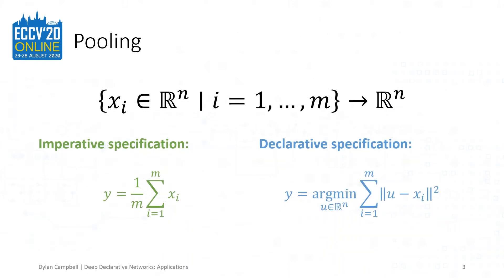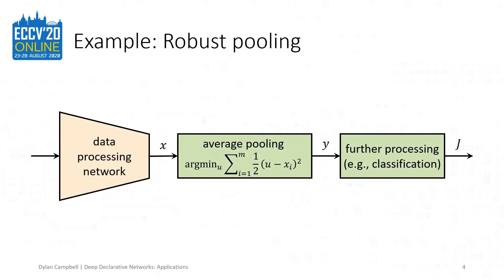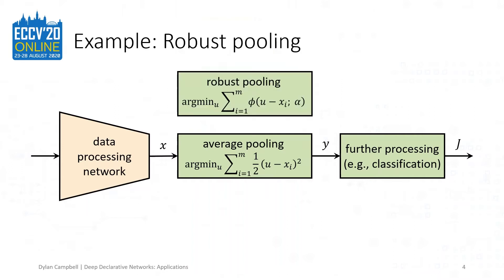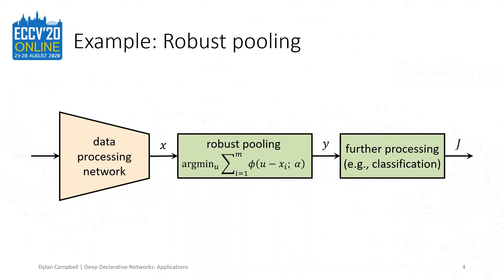We'll first look at some examples of pooling, which was flagged in the introductory talk. We saw that global average pooling, which is a standard neural network operation, could be specified as a declarative layer, allowing us to think about how this operation might be usefully modified. Writing average pooling as a declarative layer lets us see immediately that we can drop in alternatives for this layer, such as robust pooling, where we replace the L2 distance of the average pooling operation with a robust penalty function phi.